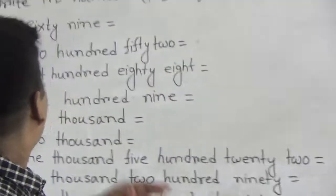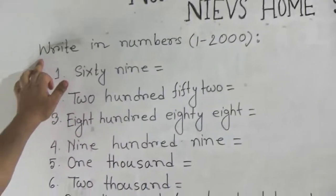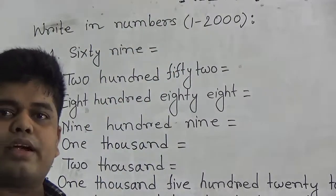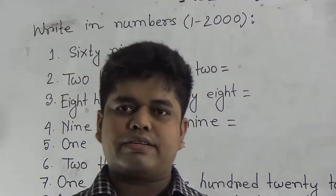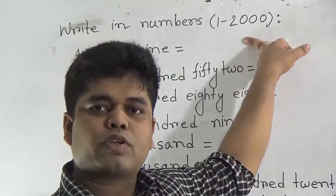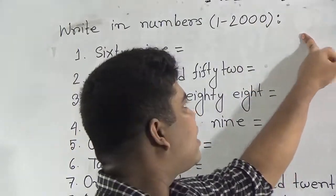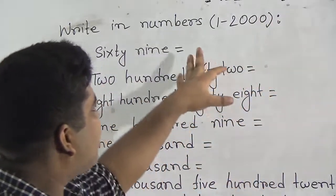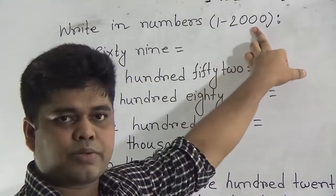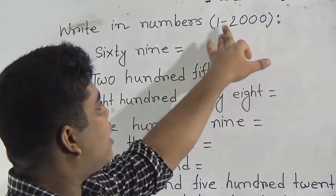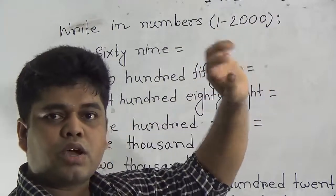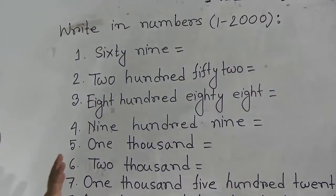Our today's topic is writing numbers. In your half-yearly exam, we learnt writing numbers from 1 to 1000, and now we shall learn 1001 to 2000. Before starting to learn 1001 to 2000, we will recall some writing numbers from 1 to 1000.